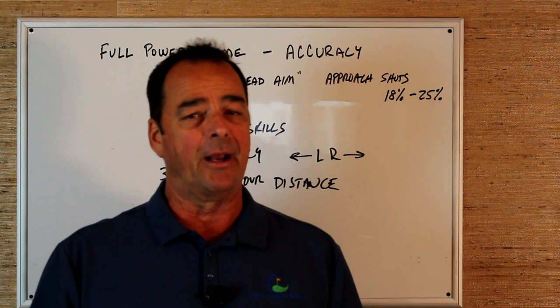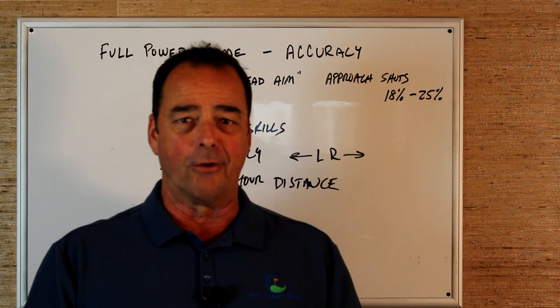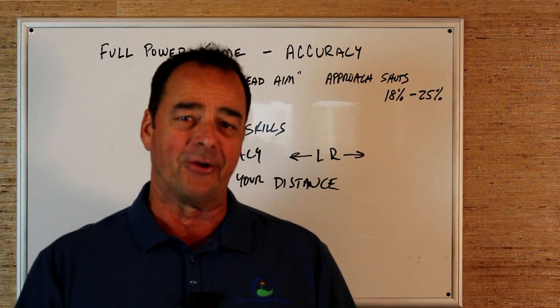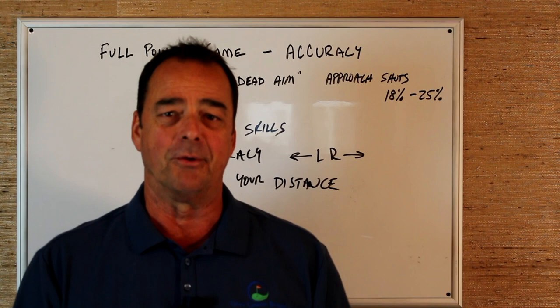So take your clubs out, make the effort, find out how far you hit each club on average, keep track of your groups, go for your average distance, not the one time that you piped it, but go for your average distance, know what your distances are for each club in the bag. And that's going to help you dramatically.